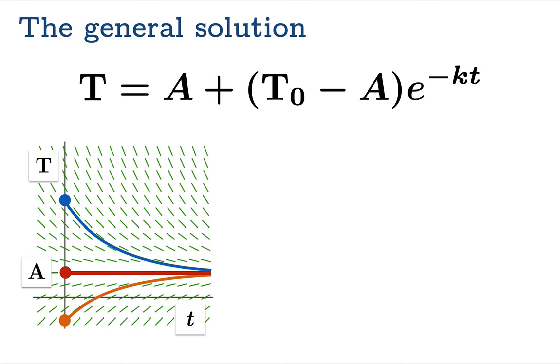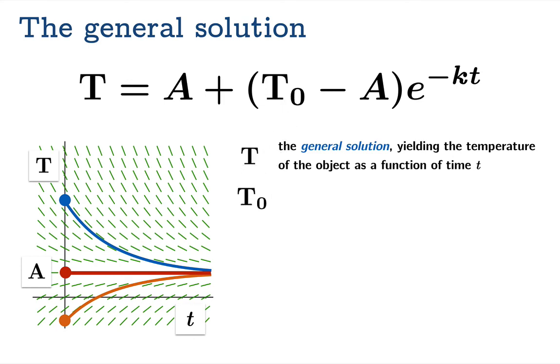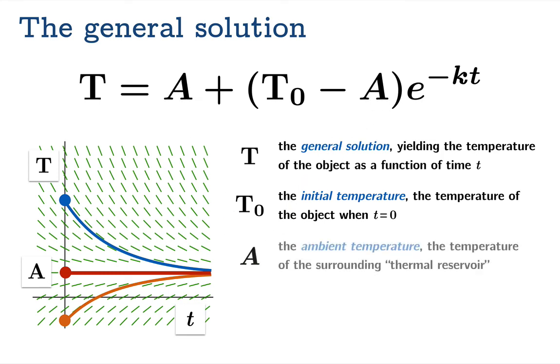Let's just recap. Here's the solution to Newton's law of cooling. Capital T is the general solution yielding the temperature of the object as a function of time t. T0 is the initial temperature, otherwise known as the temperature of the object at time t equals zero. A is the ambient temperature, a constant for the problem. It's the temperature of the surrounding thermal reservoir. And finally, k is the cooling constant, a positive number that depends on the object.